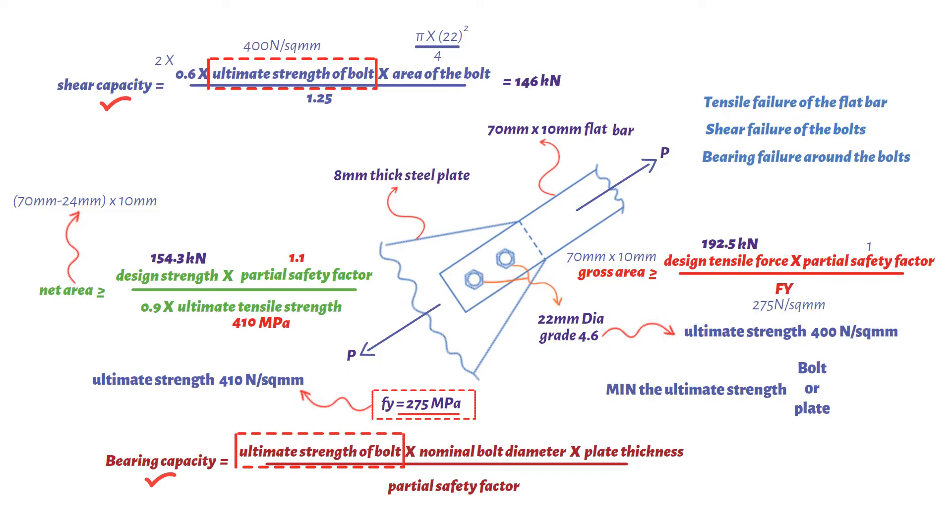Finally, based on bearing capacity equation, which equals 2 times the ultimate strength of 400 newton per square millimeters times bolt's diameter times 10 millimeters divided by partial safety factor 1.25 divided by 1000. This results in a value of 140.8 kilonewtons.